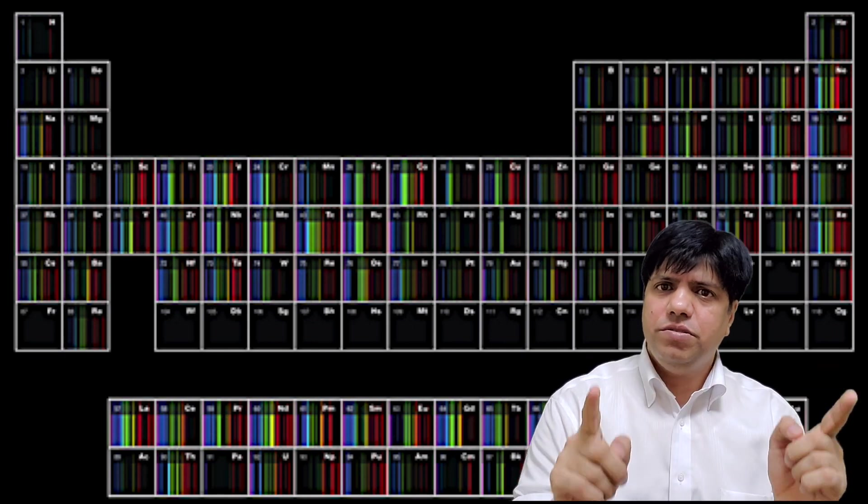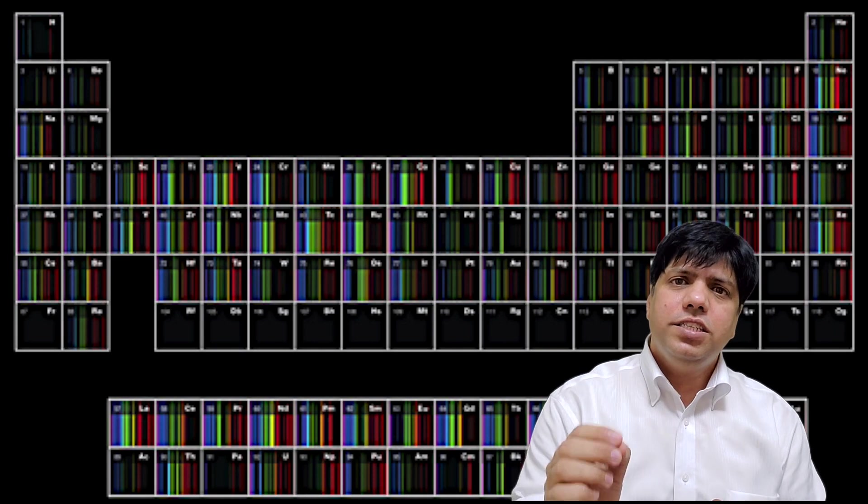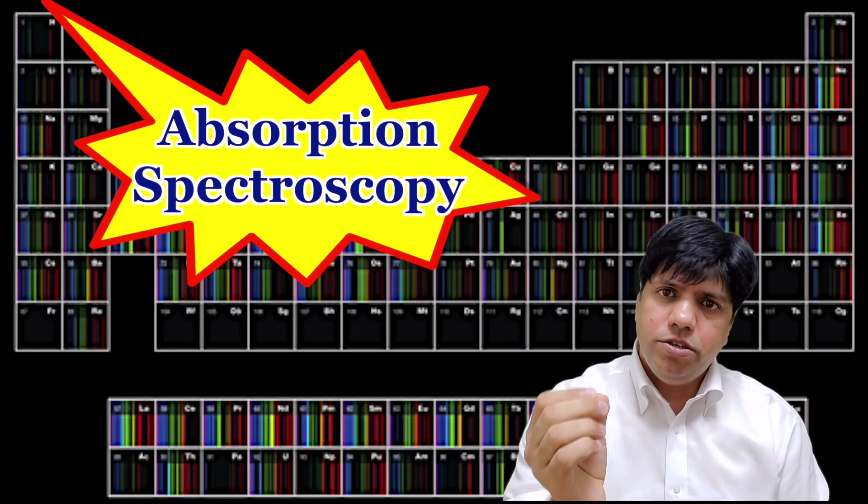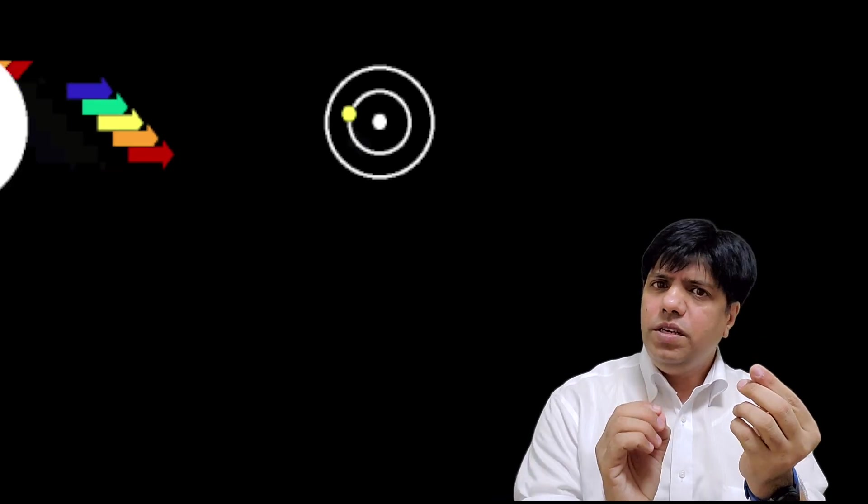So what I just told you is this pattern, you have the spectrum and you have black lines in there, this is what we call absorption spectroscopy. But on earth we already have let's say hydrogen gas, if you give it some energy the electrons they go to a higher state.